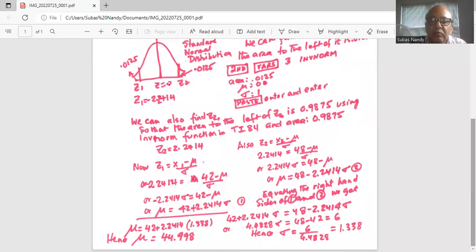So 42 plus 2.2414 sigma from equation 1 equals 48 minus 2.2414 sigma from equation 2. And then we solve for sigma. So if we move sigma to the left hand side, 4.4228 times sigma equals 6. Now sigma is 6 divided by 4.4228, which is 1.338.